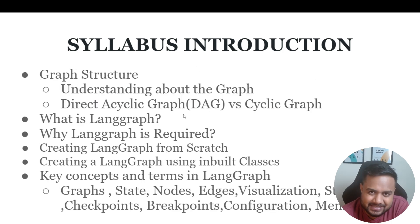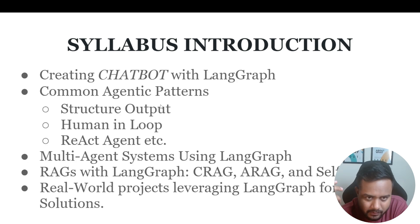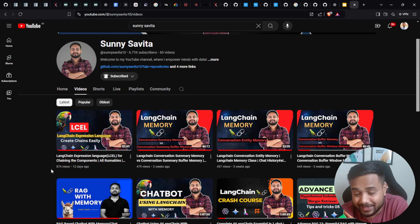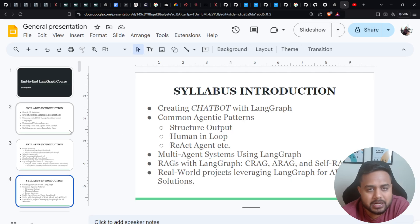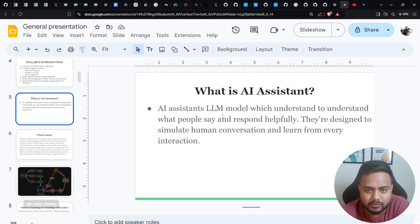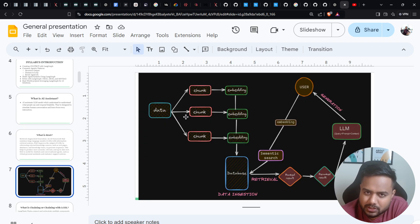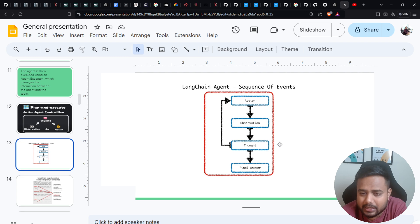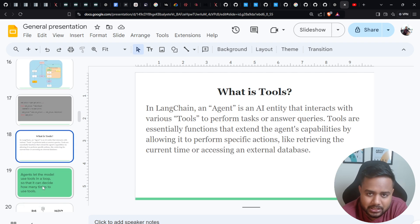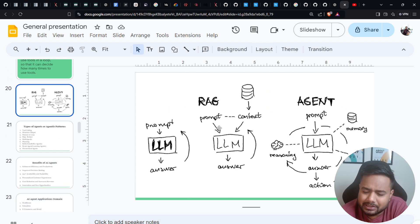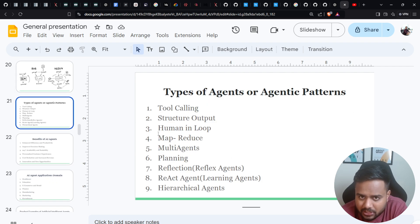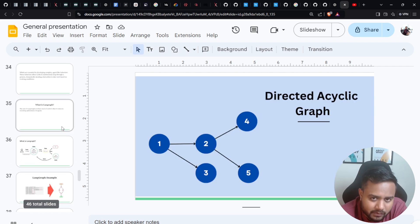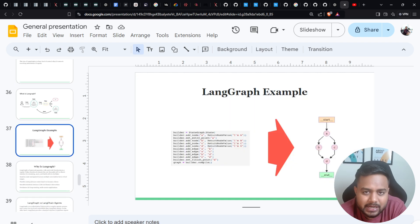That's the complete introduction of the syllabus — I hope it's clear and you're excited to cover it. You'll find the other videos soon. I've already created refined slides for all of you covering: the assistant, RAG diagram, chaining, agents, tools, different graph images of agents, the difference between RAG, agents, and simple assistants, types of agents, benefits of agents, and then LangGraph topics. Every kind of slide has been created for you.